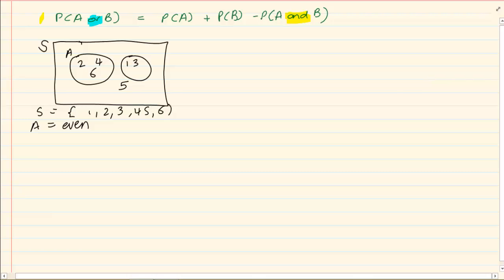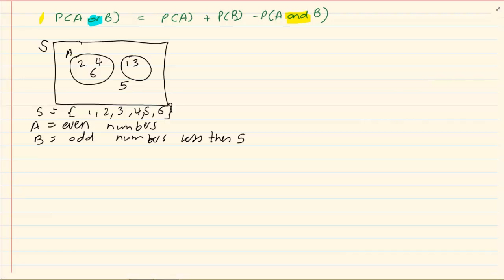I am using a dice and I know my sample space is 1, 2, 3, 4, 5, 6. Event A is even numbers. Event B is odd numbers less than 5. Now what is interesting is that there is no link between the two. They are not overlapping.